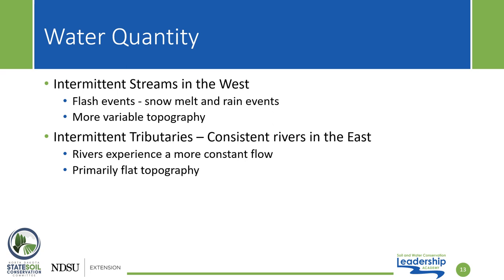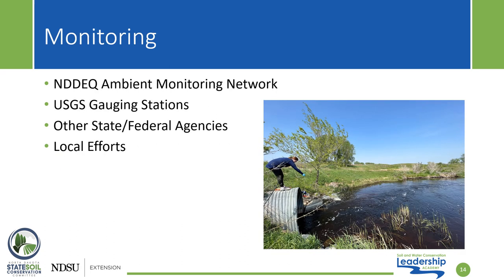Water quantity is heavily impacted by topography and climate. For example, in North Dakota, we have more intermittent streams in the western portion of the state due to more variable topography and the likelihood of flash events. In the eastern portion of the state, we have more intermittent tributaries and more consistent river systems, as the topography is less variable and rivers experience more constant flow throughout their seasons. To determine if a watershed has good water quality and quantity, we need to monitor. The North Dakota Department of Environmental Quality has an ambient monitoring network for rivers, streams, and lakes. The United States Geological Survey has gauging stations positioned on different water bodies across the state for measuring flow and stage heights. These stations can also be equipped with meters to do real-time water quality data collection.